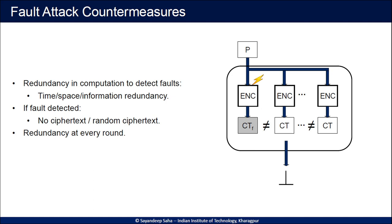What security guarantees does this redundancy provide? If you inject a fault in one of the redundant branches, the fault gets detected and you get enough protection. However, you can still attack in principle if you inject an equal-value fault in all the redundant branches. If the degree of redundancy is fairly high, the probability of injecting the same-valued fault in all branches reduces, providing some practical security — but as we will show, this security is not sufficient.